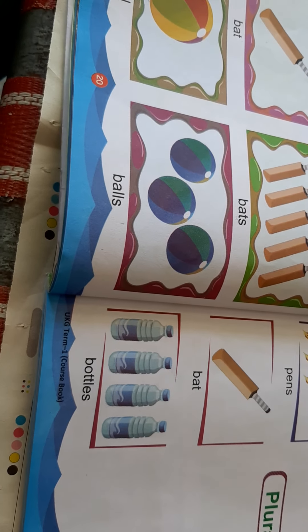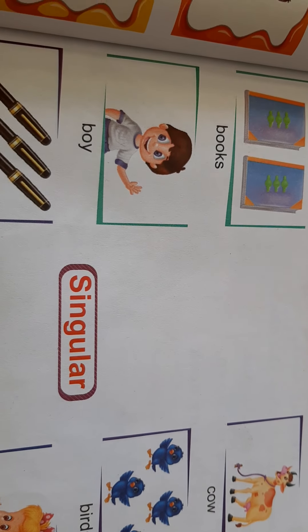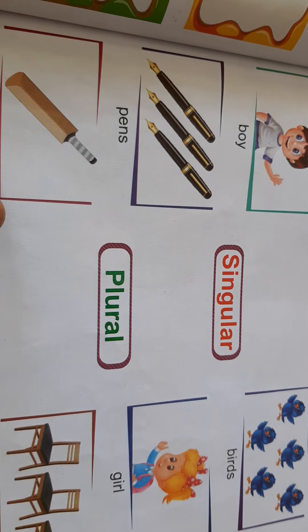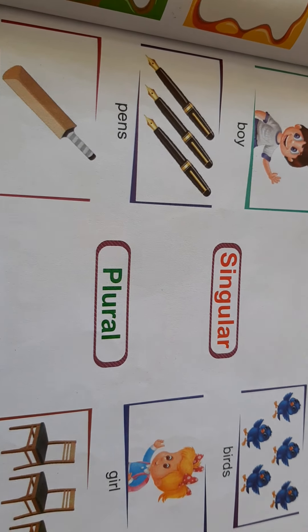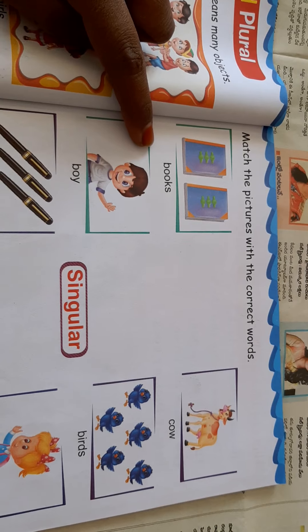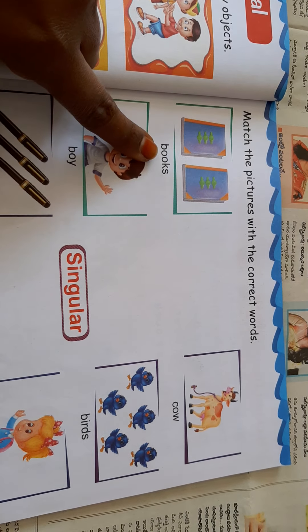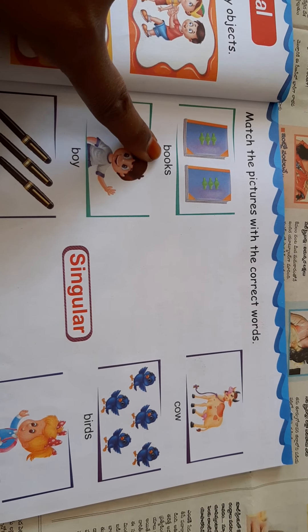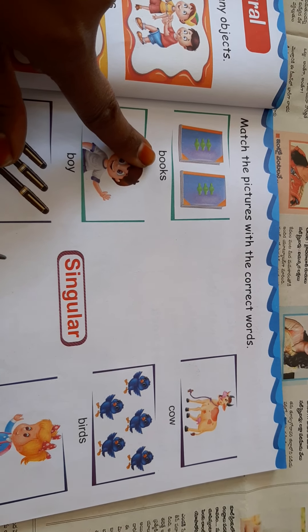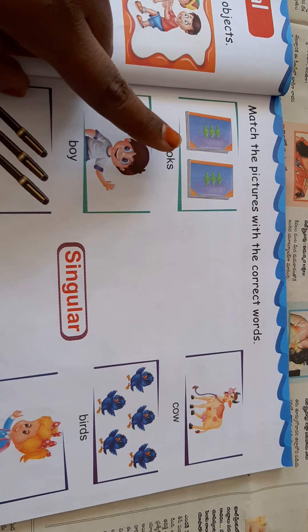In page number 21, match the pictures with the correct words. Here we have a matching exercise — singular and plural. For example, books: one book is singular, books is plural. Match the picture with the correct word.